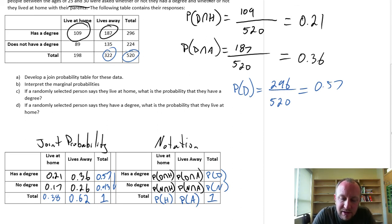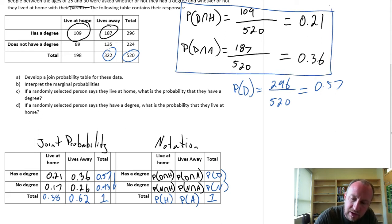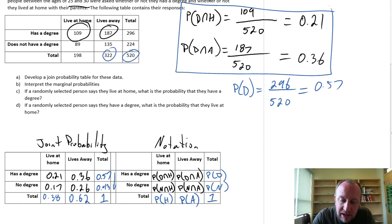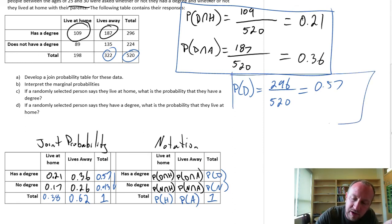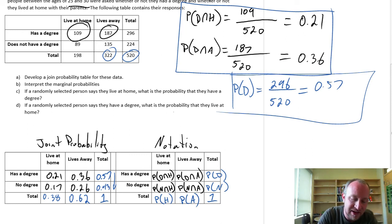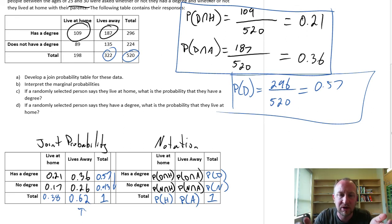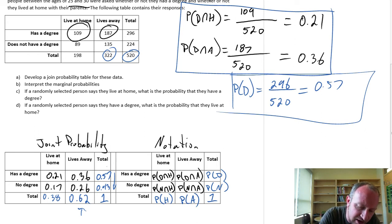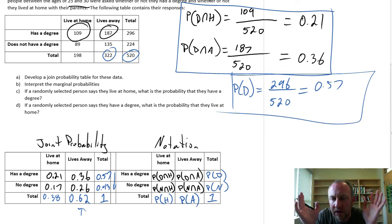So there's our joint probability table. All of the black probabilities are those intersections — the probability of any two events occurring simultaneously. All of the blue probabilities are marginal probabilities — the probability of any one characteristic occurring. Drawing somebody at random, the probability they live away from home is 0.62. We can interpret any of these marginal probabilities straightforwardly: 57% chance somebody has a degree, 43% chance somebody doesn't.